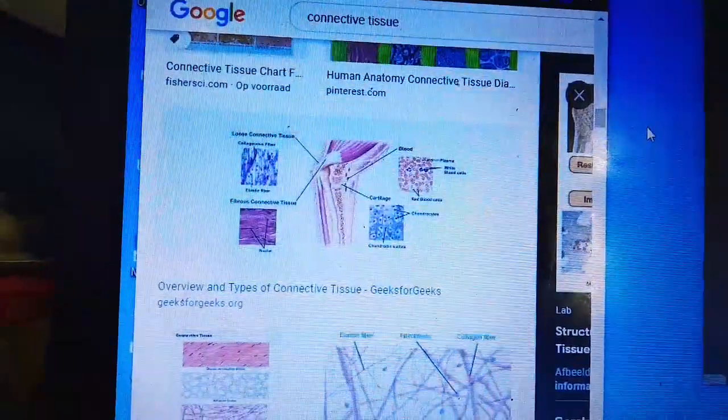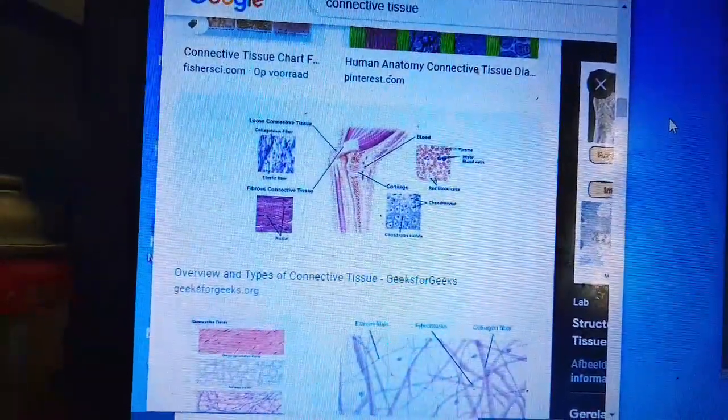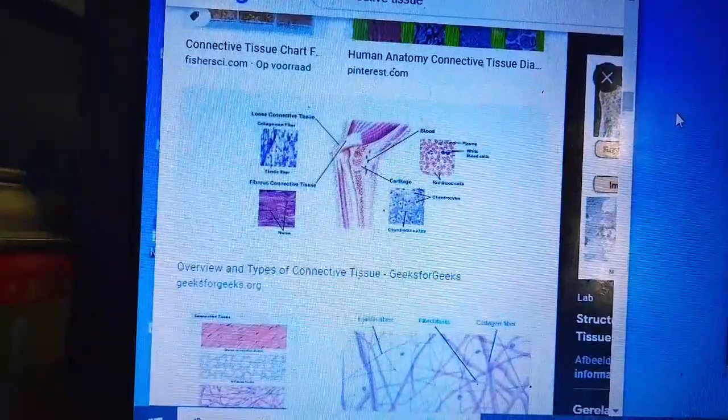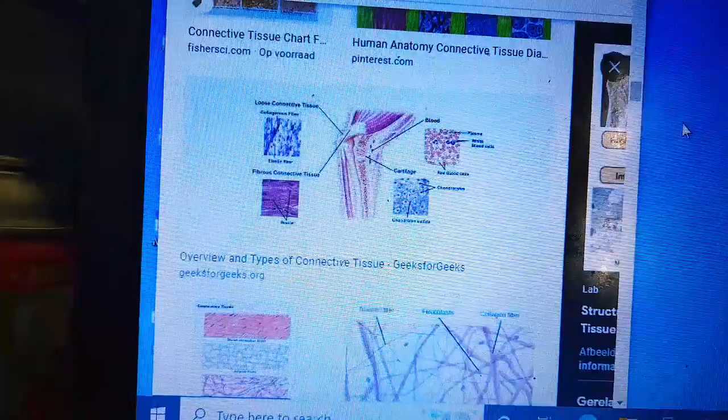Let us learn about some more connective tissues. The connective tissue can be classified into three categories: loose connective tissue, dense connective tissue, and specialized connective tissues. Let us take a look at loose connective tissue.